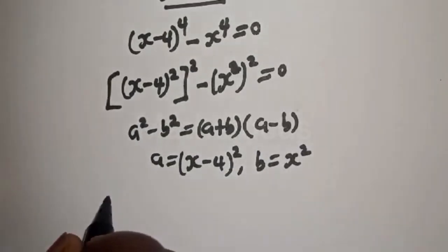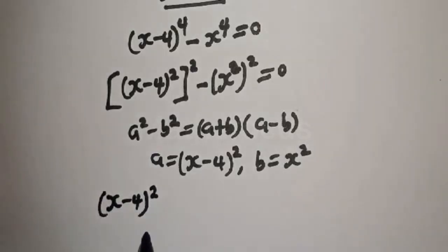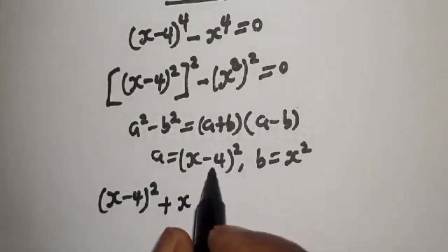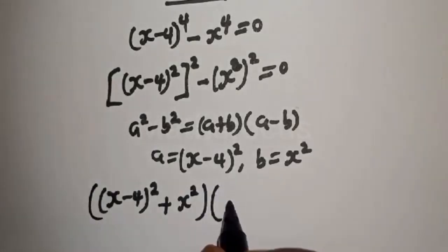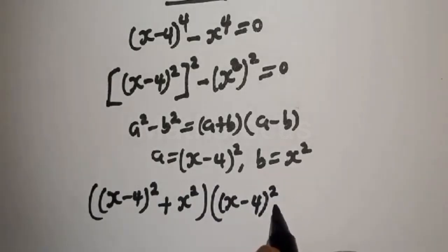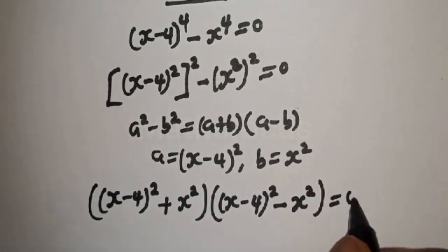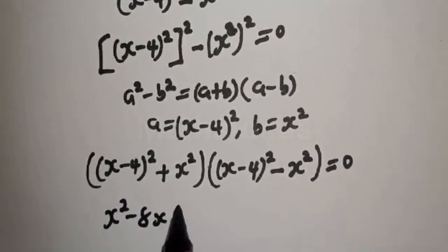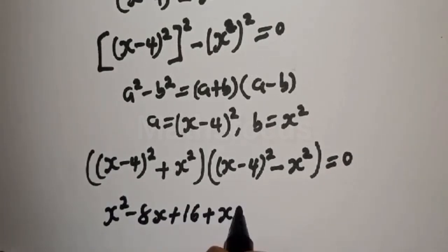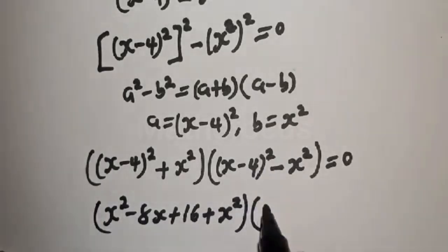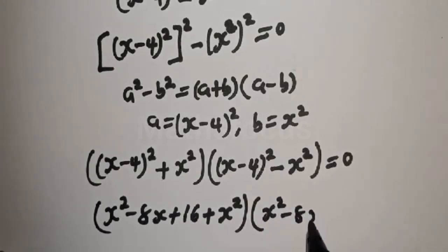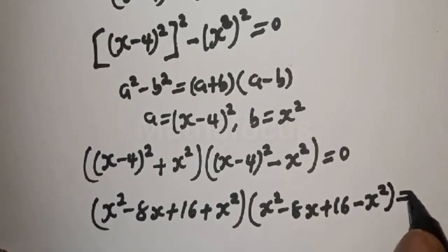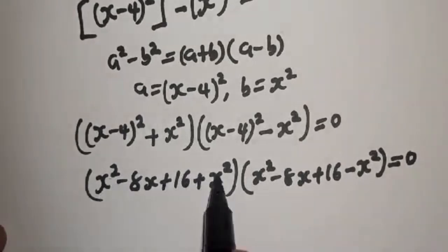We have: (x minus 4) squared plus x squared, multiplied by (x minus 4) squared minus x squared, equal to zero. Expanding, x minus 4 squared is x squared minus 8x plus 16, plus x squared. Then multiplied by x minus 4 squared, which is x squared minus 8x plus 16, minus x squared, equals zero.